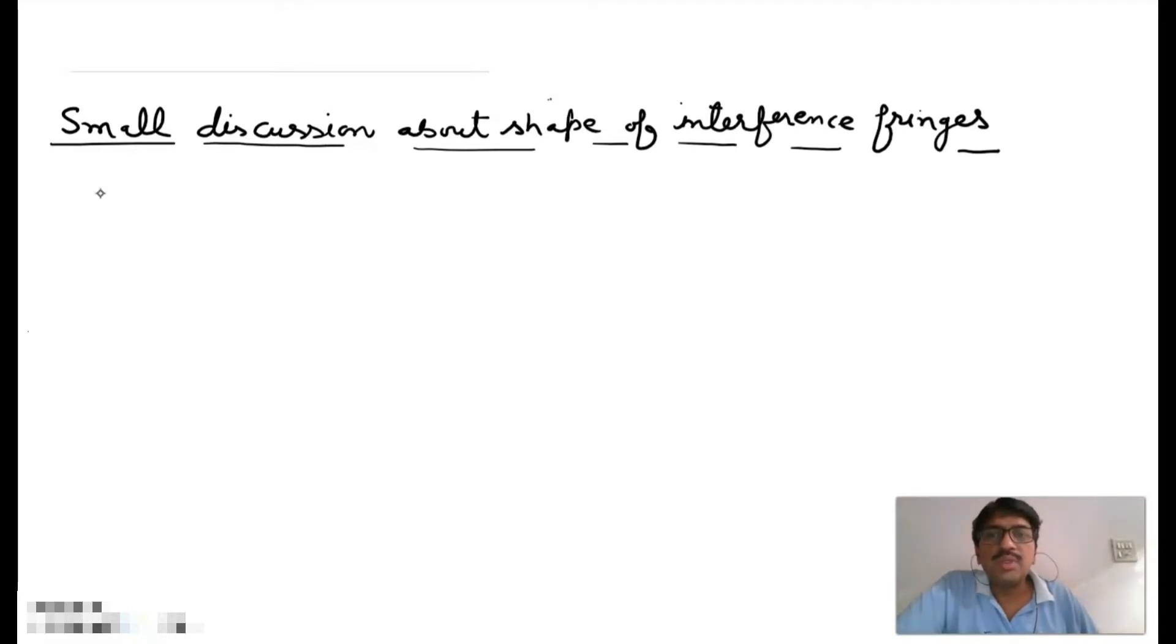in this experiment if we watch the fringes then we can see that the shapes of fringes are like this. It means straight lines.